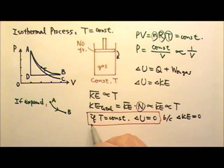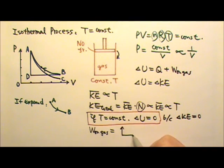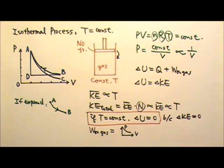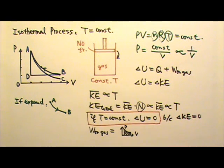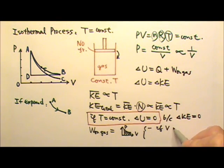Now let's look at the work done on the gas. We talked about it in the last video that the work done on the gas would be the area of the PV diagram. Since the PV diagram is going to be curved, the area would be the area under the graph, and the work done on the gas would be negative if the volume increases.